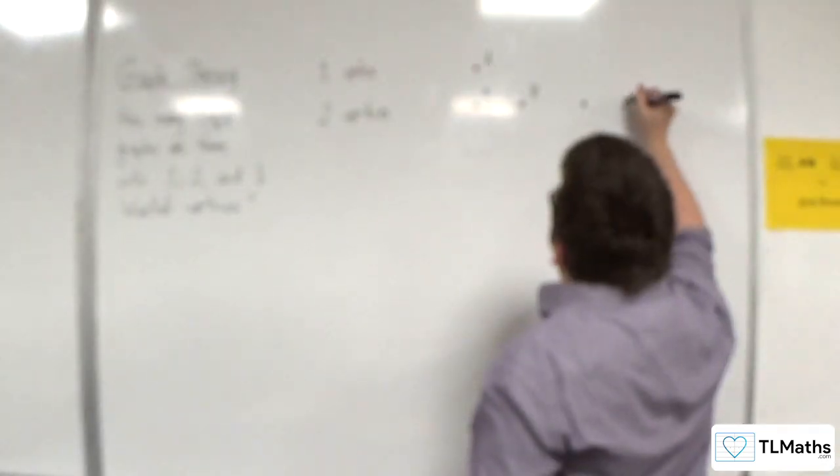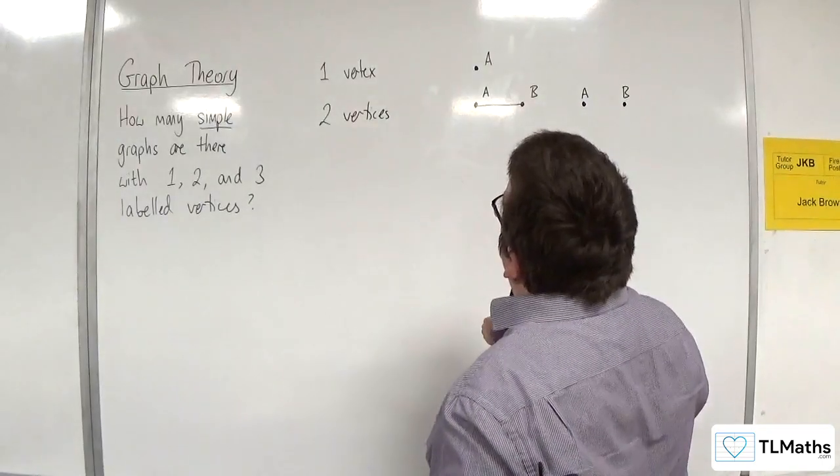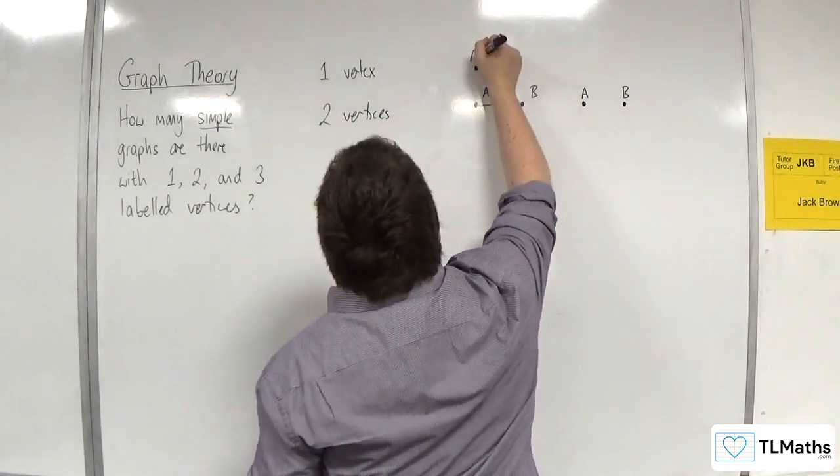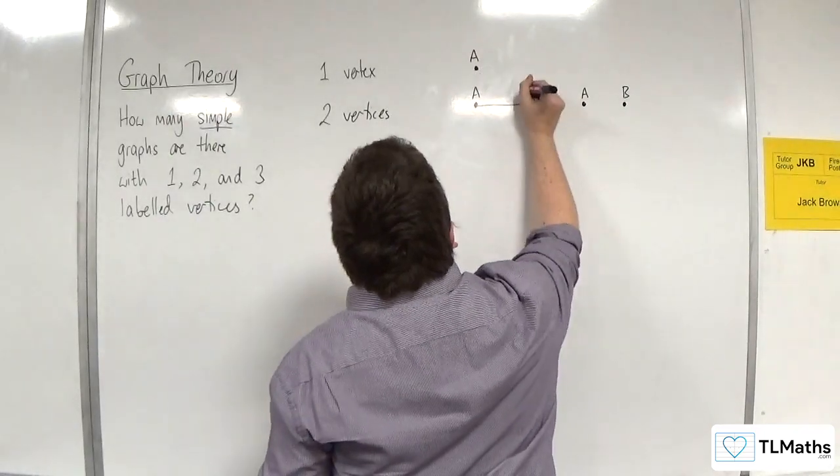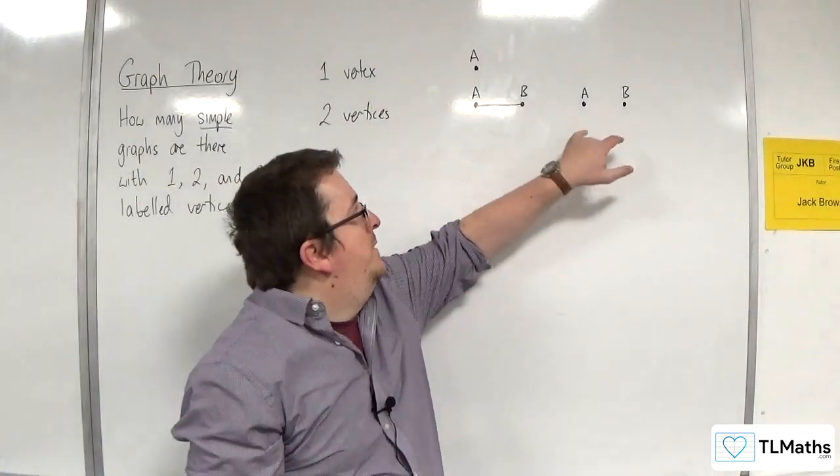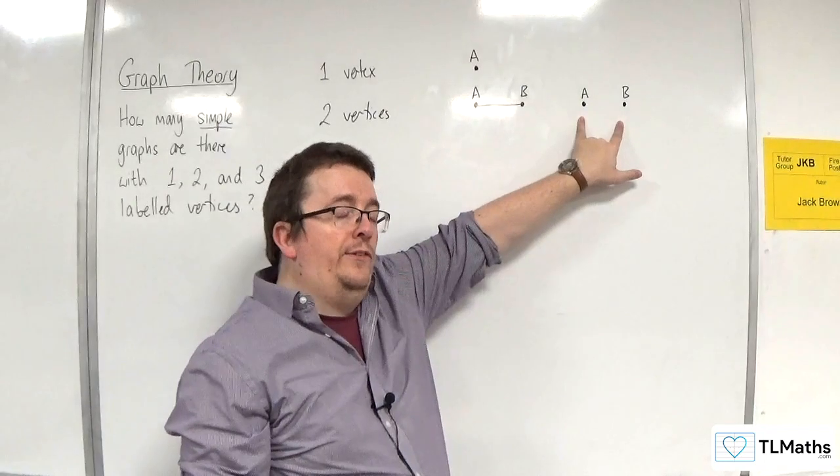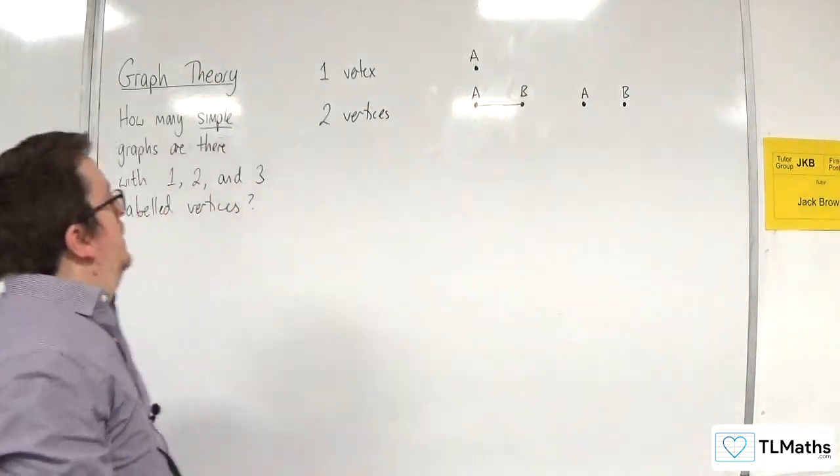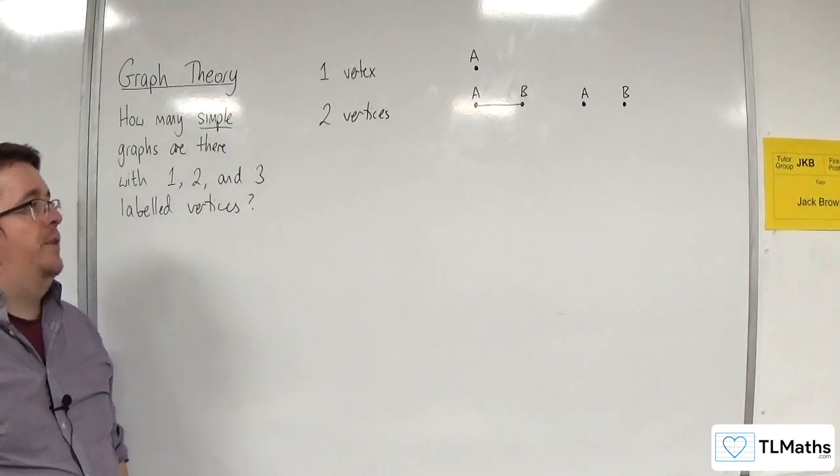So, a second option is just A and B disconnected, like that. Let me just re-level this because I've got the letters above the vertices there. That makes it look a little bit neater. So, we can either have this situation where they're connected, or this situation where they're disconnected. So, there are two possibilities for two vertices.